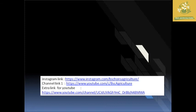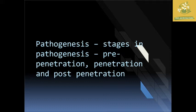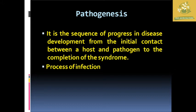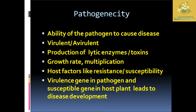In this video we are going to see about fundamentals of pathology. I am going to cover the pathogenesis process by different organisms. Pathogenesis is known as the sequence of progress where the disease development starts in the host from its initial contact to the complete life cycle of the pathogen. It can also be called the process of infection, and it can vary for each and every different organism.